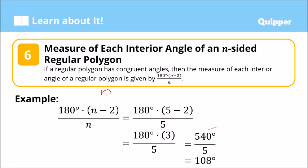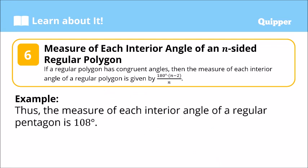Our n is 5 since we are talking about a regular pentagon. So that's 180 degrees times (5 minus 2) divided by 5. Five minus 2 is 3, so we have 180 times 3 divided by 5, which equals 540 divided by 5 — that gives us 108 degrees. Therefore, the measure of each interior angle of a regular pentagon is 108 degrees.